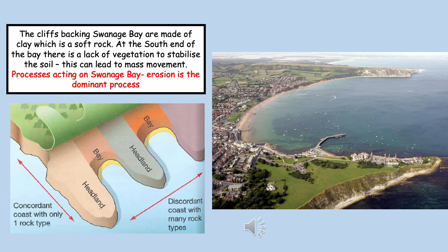The first landform we're going to look at on the Dorset coastline is Swanage Bay. Swanage Bay has formed on a discordant coastline, which means we have alternating bands of hard and soft rock, as seen in the diagram on the left hand side. The bay area is soft rock, whereas either side we have two headlands made up of harder rock. At the south side of the bay, a lack of vegetation can lead to mass movement as the vegetation is not there to stabilise the soil.